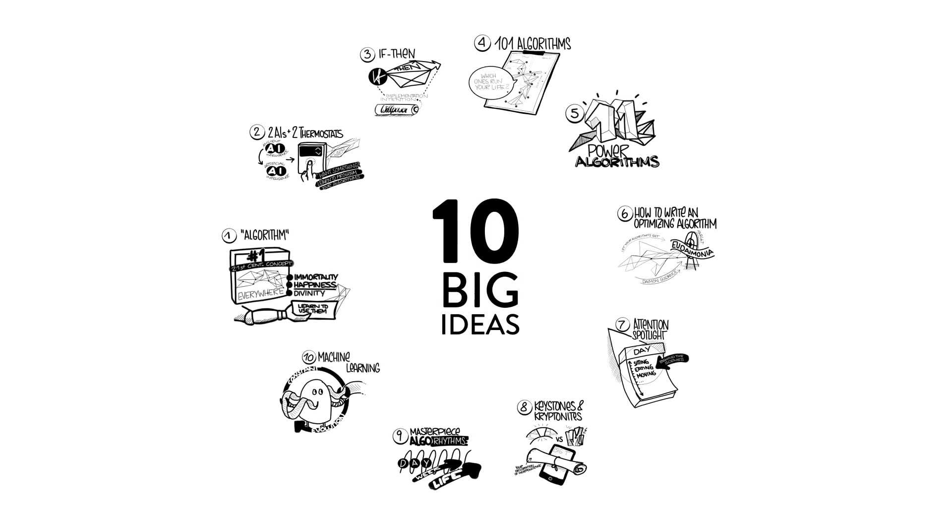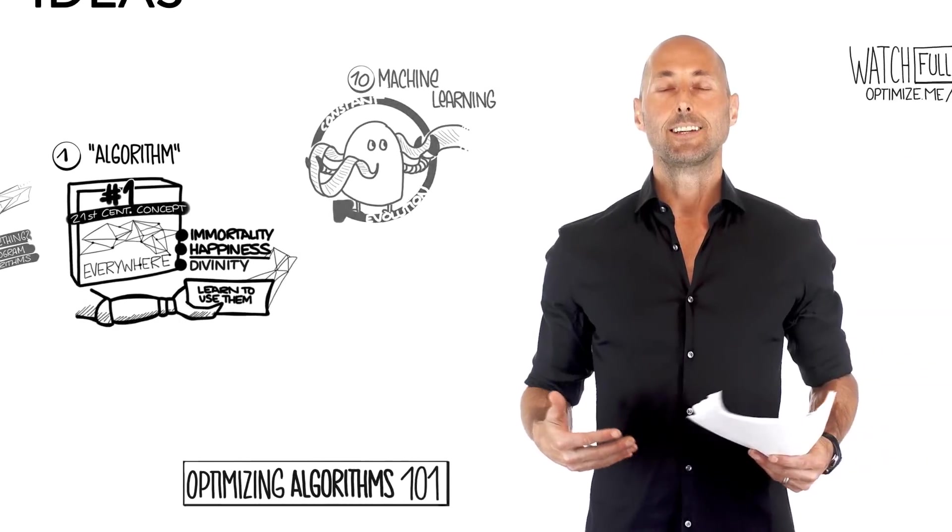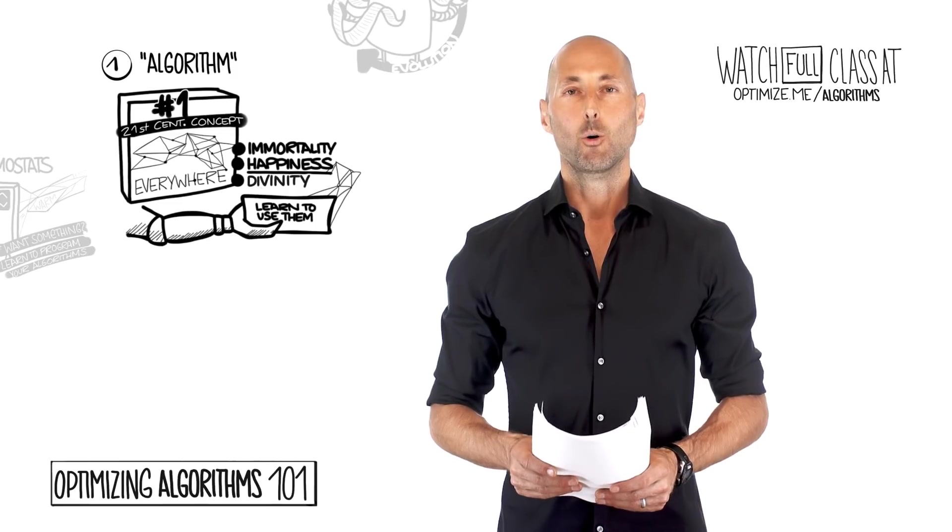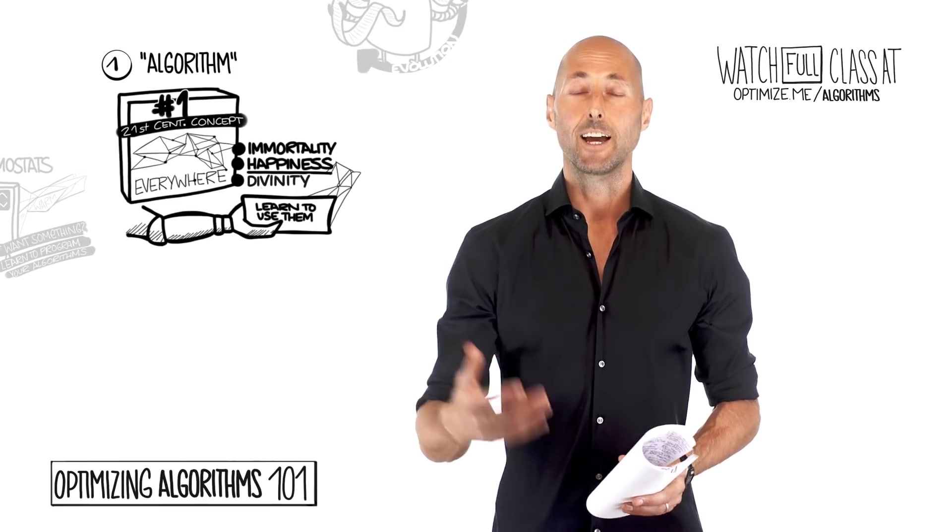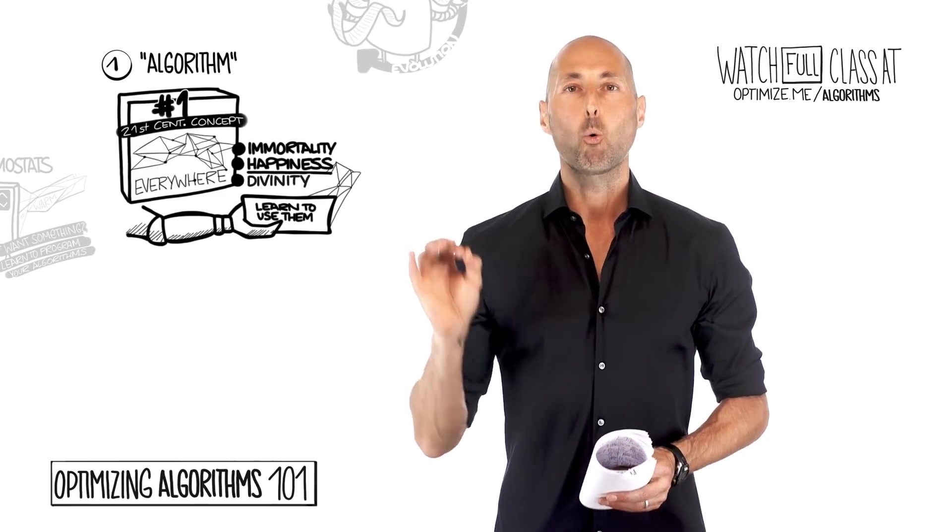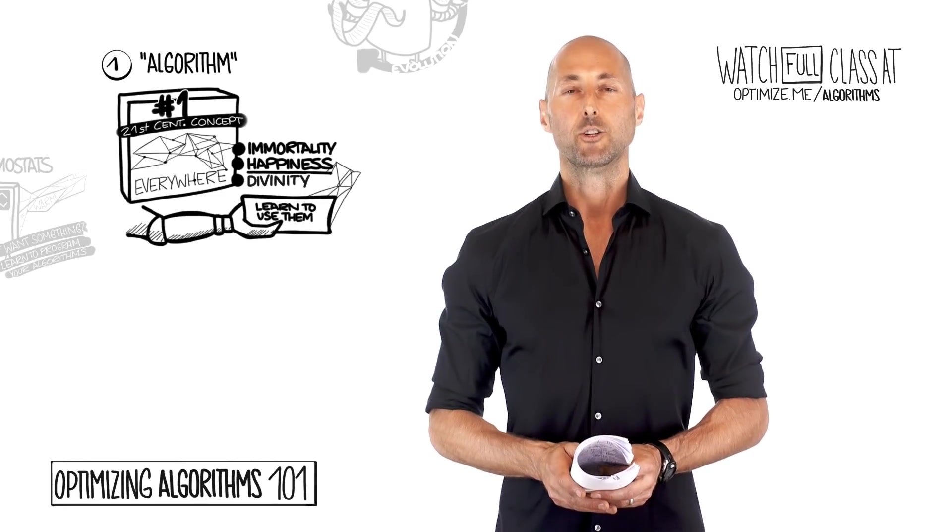The first big idea is an algorithm. What is an algorithm? Why should you care? Well, Professor Yuval Noah Harari tells us in Homo Deus that an algorithm is the most important concept of the 21st century.